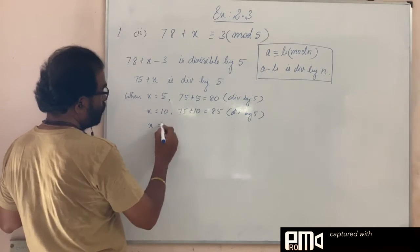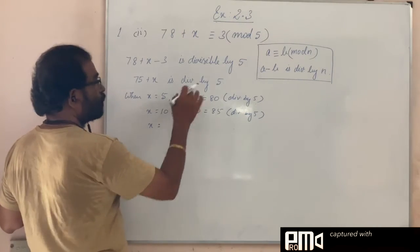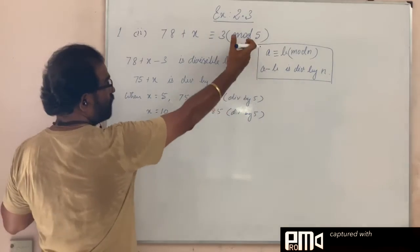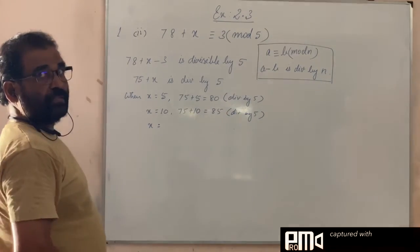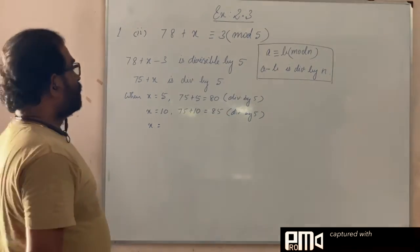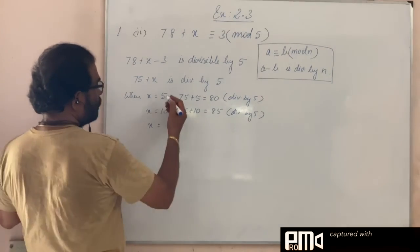Now x is equal to 10 + 5. Go on increasing by 5, because mod 5. The next number will be obtained by the successive addition of 5, 5, 5 like that.